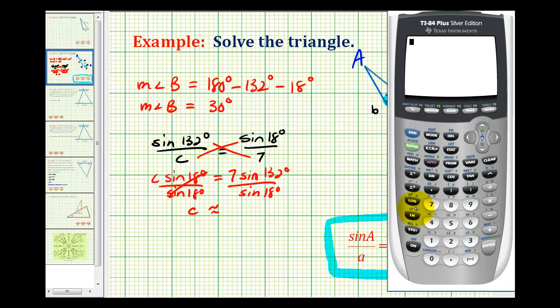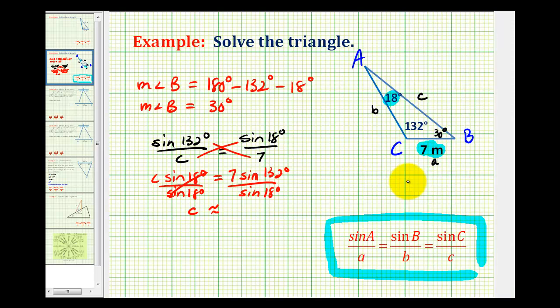Let's make sure that we're in degree mode. And we are. So the numerator is going to be 7 sine 132 degrees, and we're going to divide this by sine 18 degrees. So the length of side C is approximately 16.8, and this would be meters.